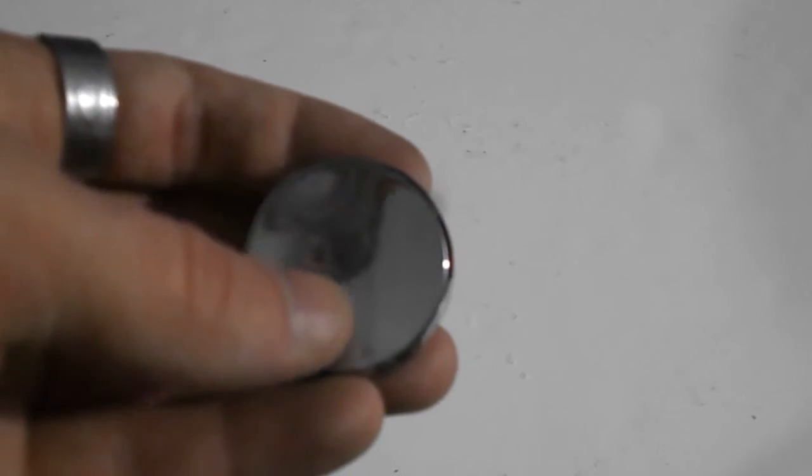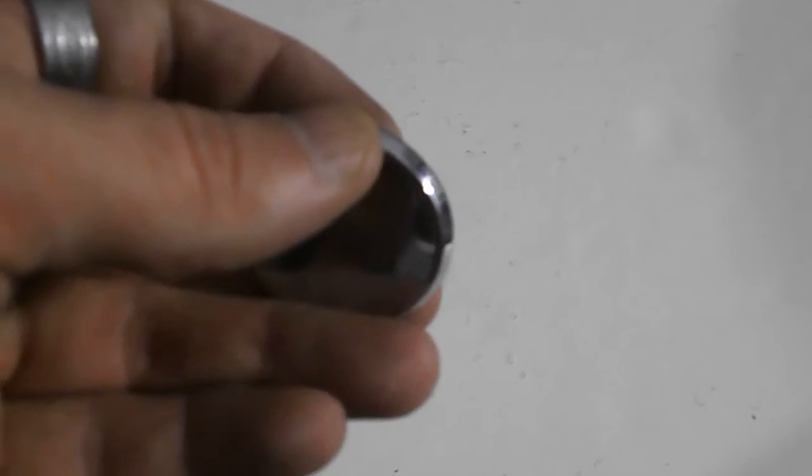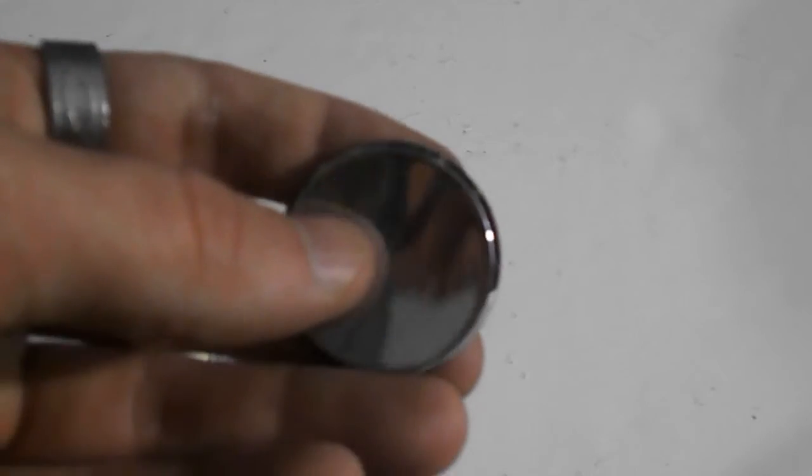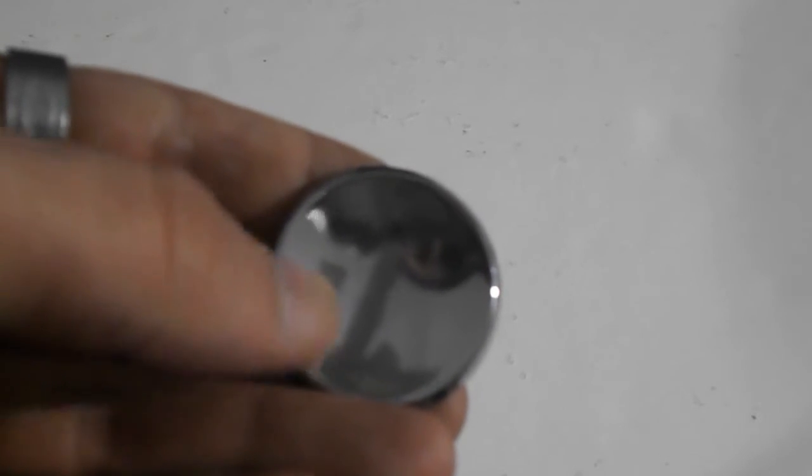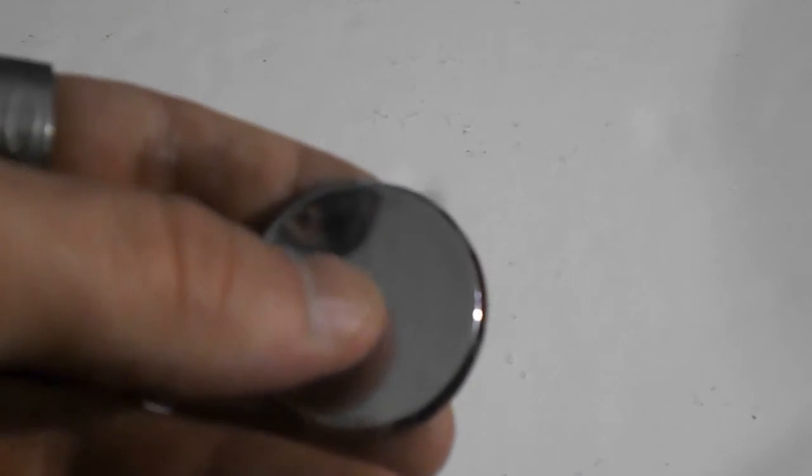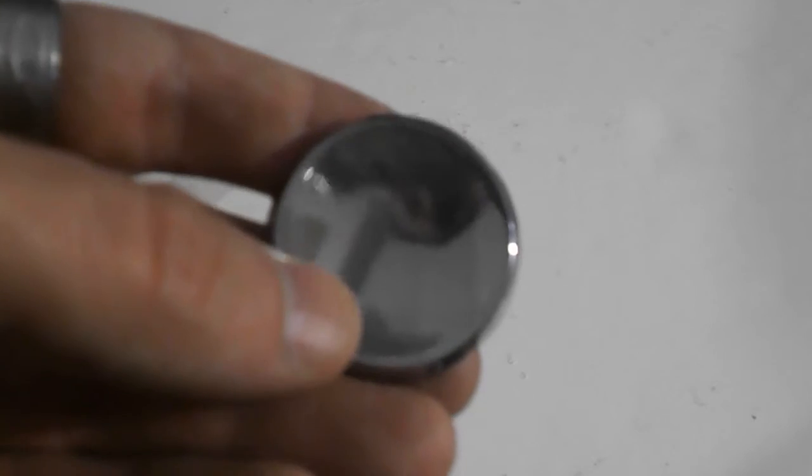But you will find chrome plated items like this doorknob, which has a plating of chromium metal on it. Now the plating is considerably high purity chromium, but the base metal on this particular knob is brass.